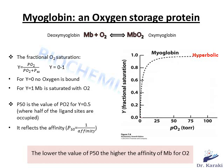To measure the amount of oxygen bound to myoglobin, we calculate Y, the fractional O2 saturation. It ranges from 0 to 1, where 0 means none of the myoglobin contains oxygen and 1 means 100% of myoglobin is bound to oxygen. The equation is: Y = pO2 / (pO2 + p50). Since oxygen is a gas, we describe its concentration using partial pressure pO2. p50 is the partial pressure of oxygen at which myoglobin is 50% saturated — the value at which Y = 0.5, where half the ligand sites are occupied. p50 also reflects affinity: the lower the p50, the higher the affinity for oxygen.